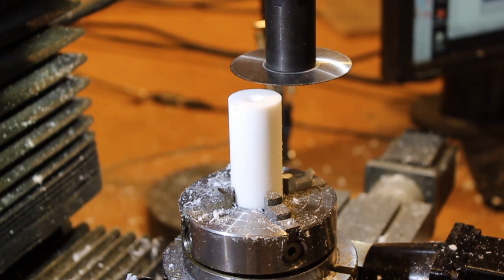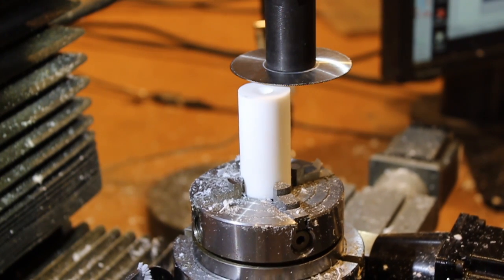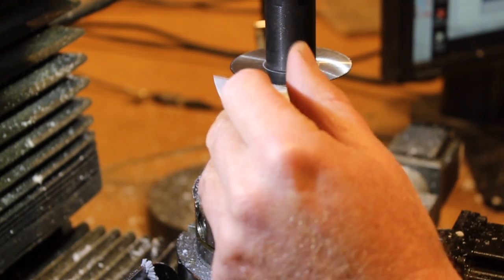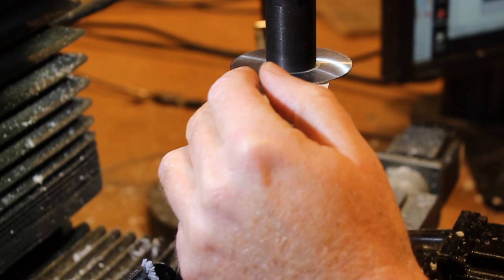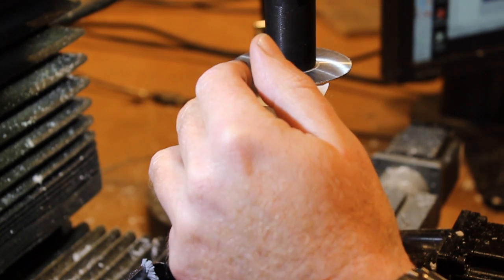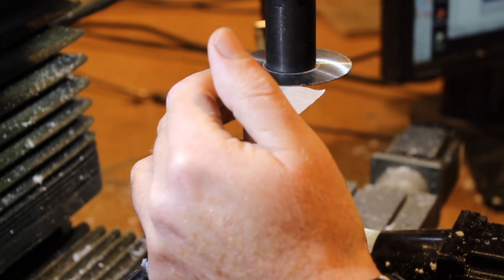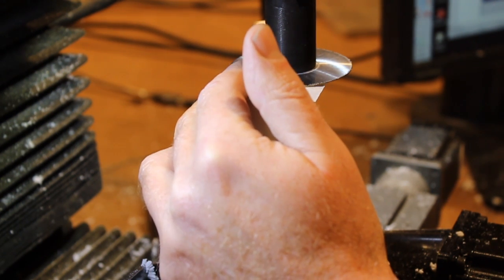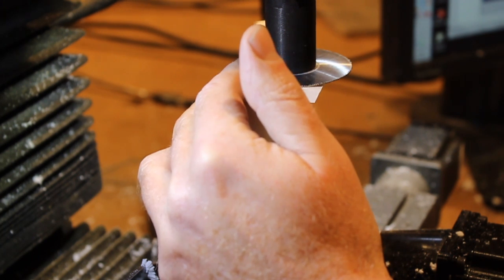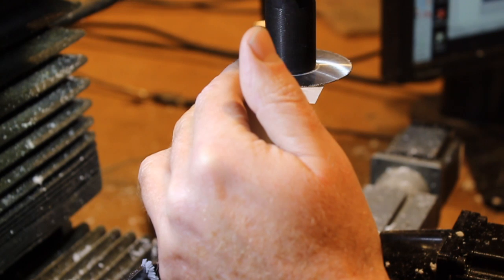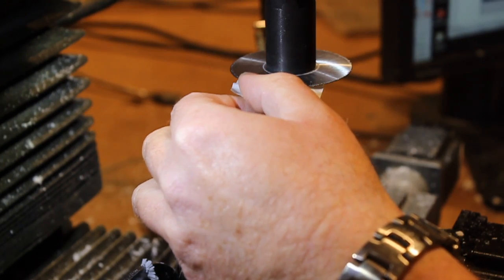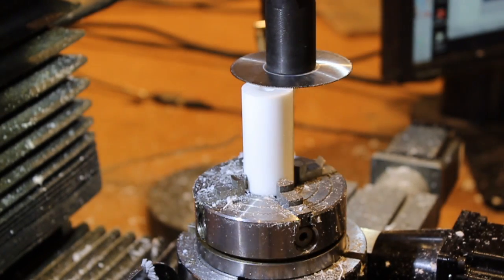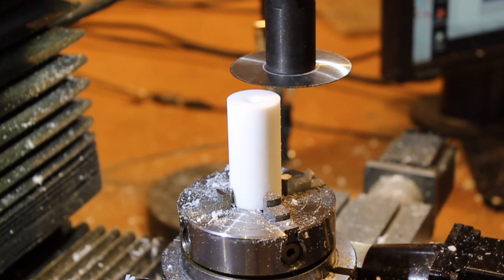I need to zero its height at the top of the blank, so I'm going to use the paper technique. Just bring the z-axis down until it pinches the paper. Now I set my z zero to zero, back it off a bit.